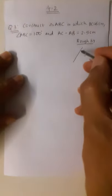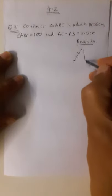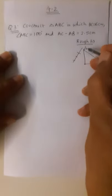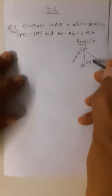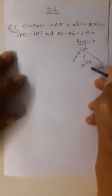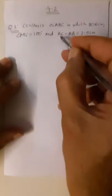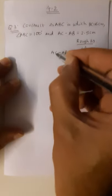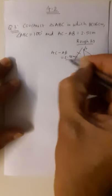I have to be careful drawing the rough diagram. Angle ABC is 100 degrees, so A is here, B is here, and C is here — this is a 100-degree angle. Side BC is given as 6 centimeter. The difference of AC and AB is given — AC is the opposite side of angle B, and AB is the adjacent side.